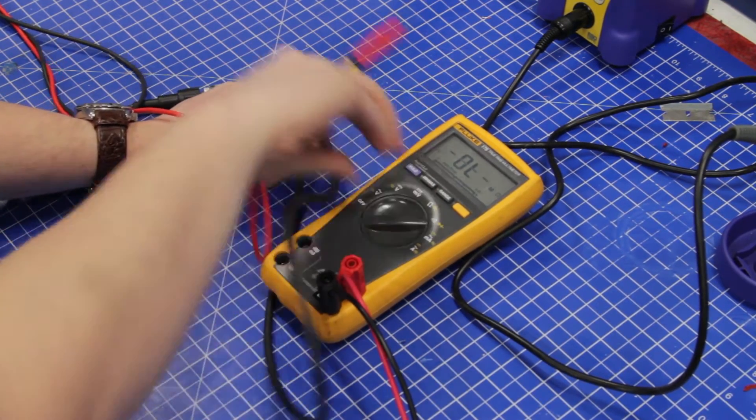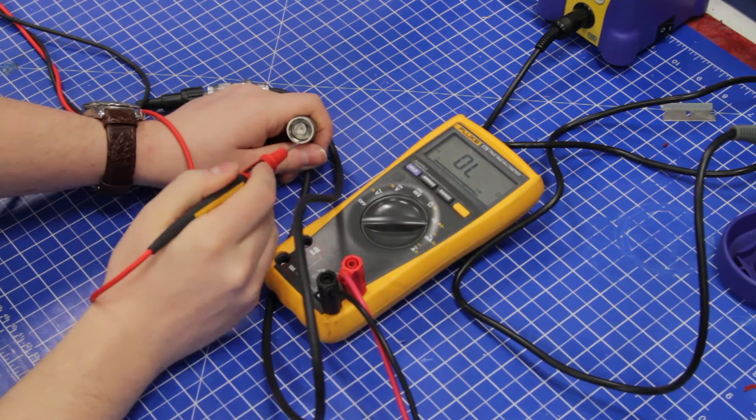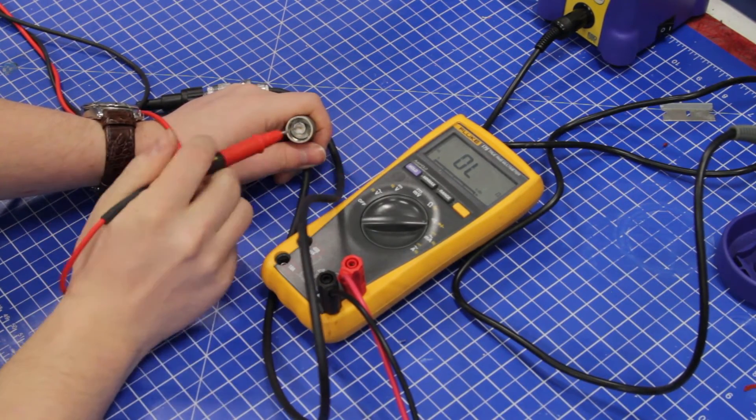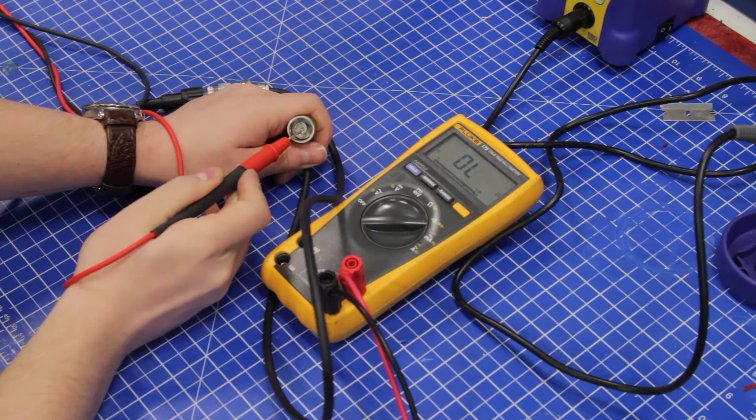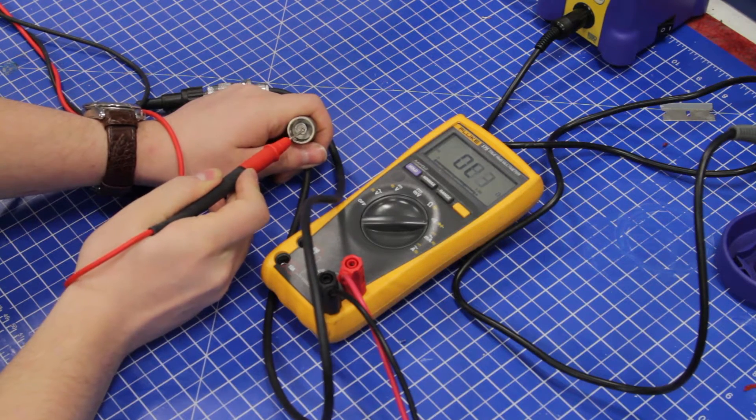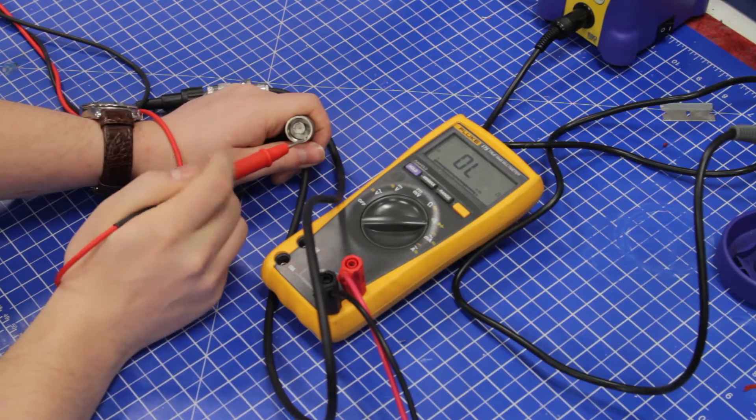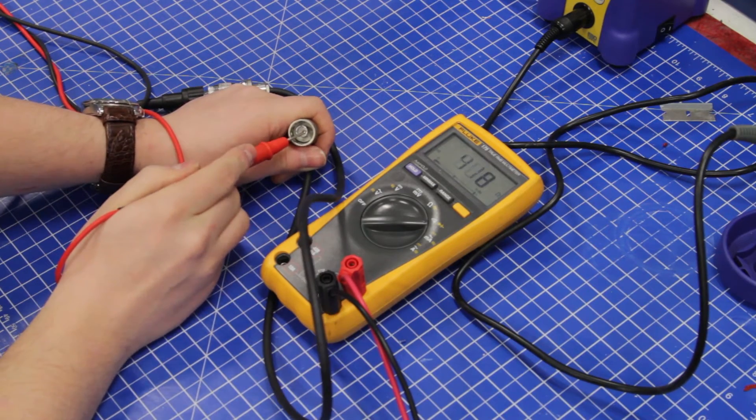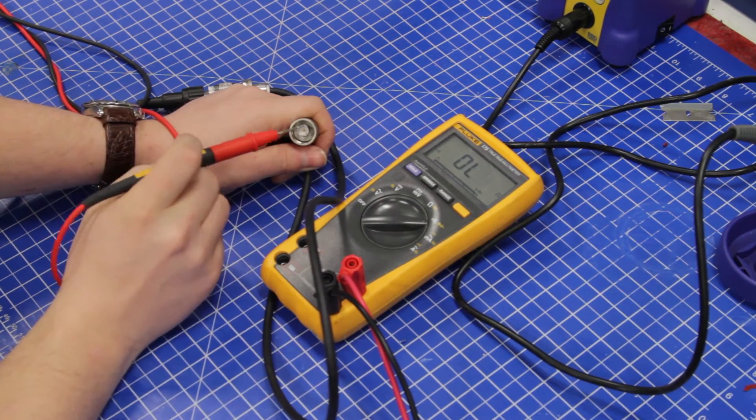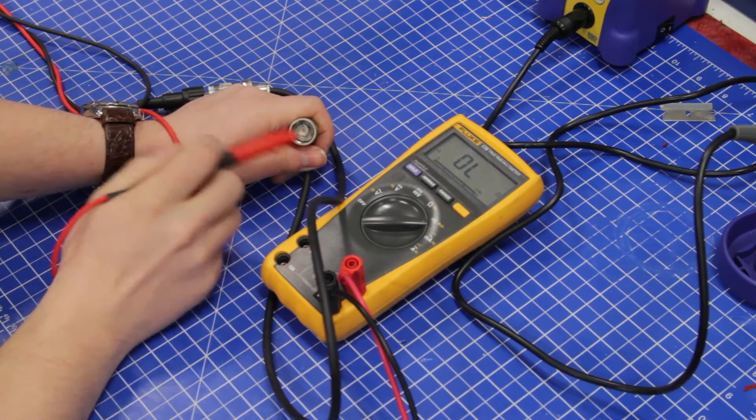If you're in a noisy environment or you can't reach the meter display very easily, then you can also use the standard diode tester beeper continuity tester. And you don't want any continuity, you want an open circuit which this is. So this cable is actually good.